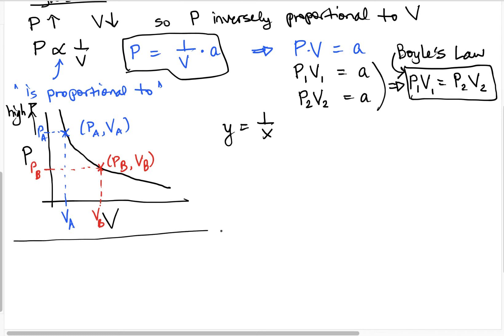Boyle's Law is looking at the pressure volume relationship. But about a century later, we had Jacques Charles, who also was studying gases. And he looked at the temperature and volume, and he held the pressure and the amount constant.